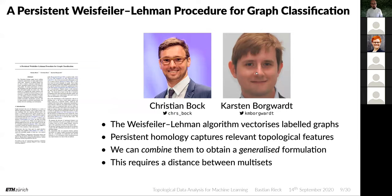Now moving to the persistent Weisfeiler-Lehman procedure for graph classification. The idea is simple: the WL algorithm can vectorize labeled graphs, and persistent homology captures relevant topological features, so we can combine the two to obtain a generalized formulation. This requires a distance between the multi-sets generated in the WL representation.